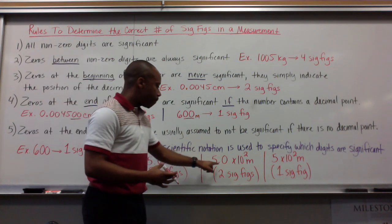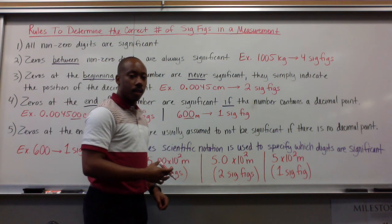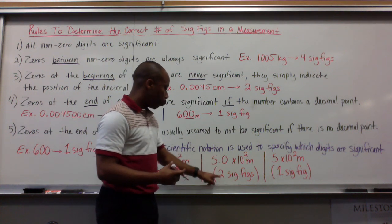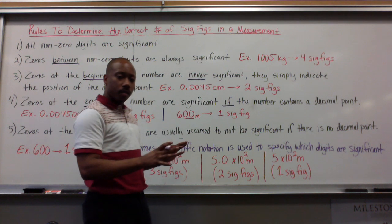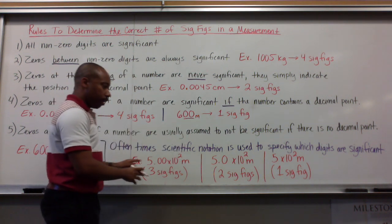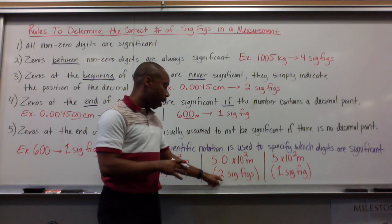Now, say I had 5.0 times 10 to the second meters. Here I have one, two significant figures. But this number is still the same as this number in its value, meaning it's 500 meters. I'm just expressing it in a different way.